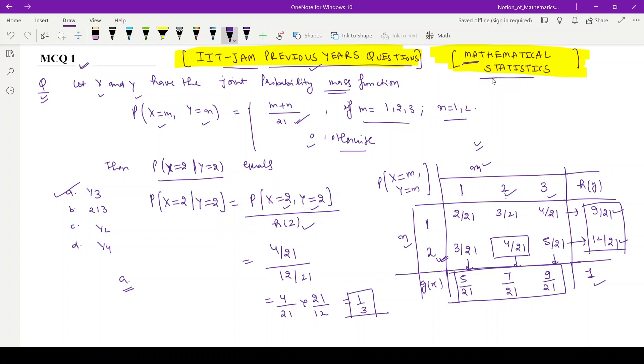The question is: let X and Y have the joint probability mass function P(X=m, Y=n) = (m+n)/21 whenever m is 1 to 3 and n is 1, 2, and it is 0 otherwise. We have to evaluate the conditional probability P(X=2 | Y=2).